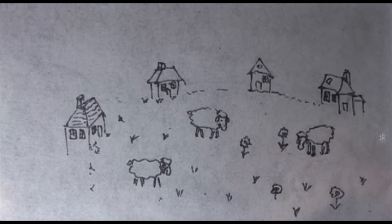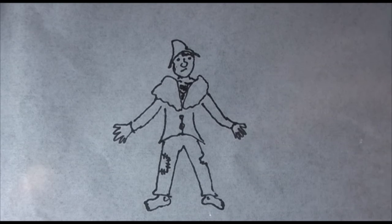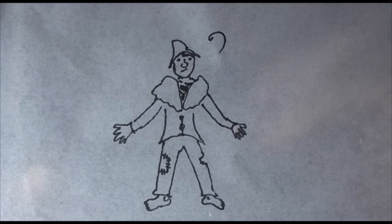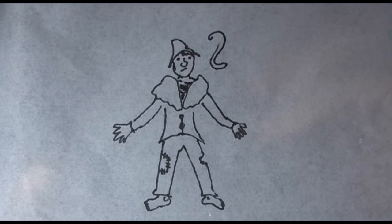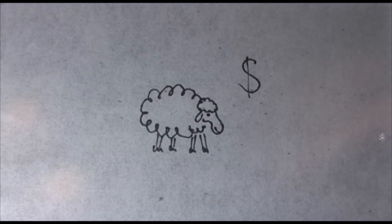Each herdsman will try to keep as many cattle as possible on the commons. Each herdsman asks himself, what is the utility to me of adding one more animal to my herd? The positive component is a function of the increment of one animal. Since the herdsman receives all the proceeds from the sale of the additional animal, the positive utility is nearly plus one.